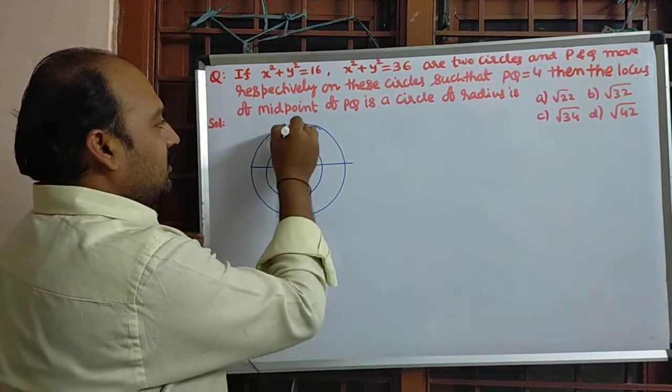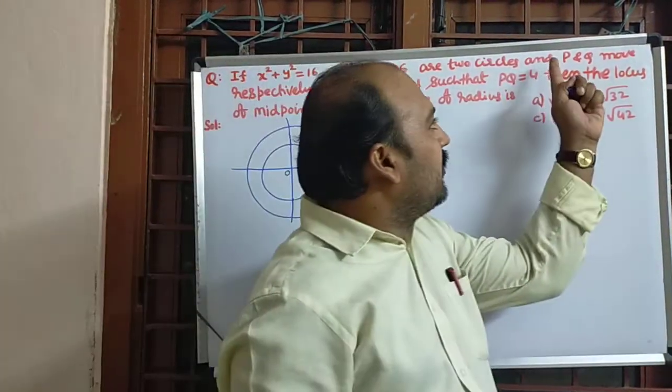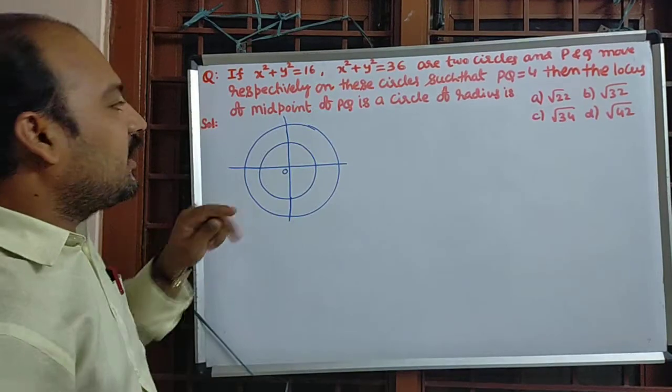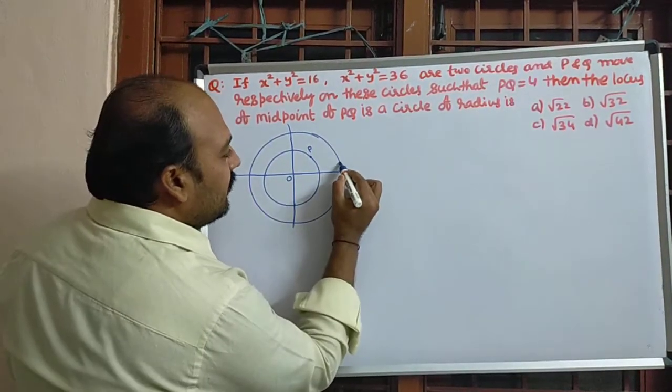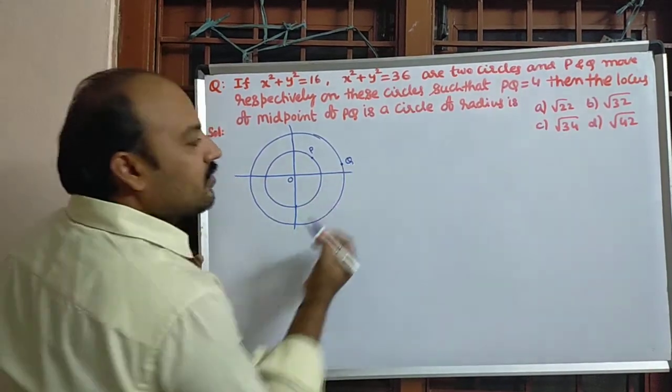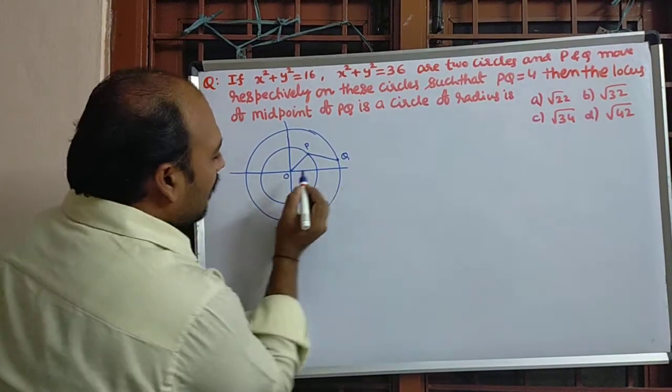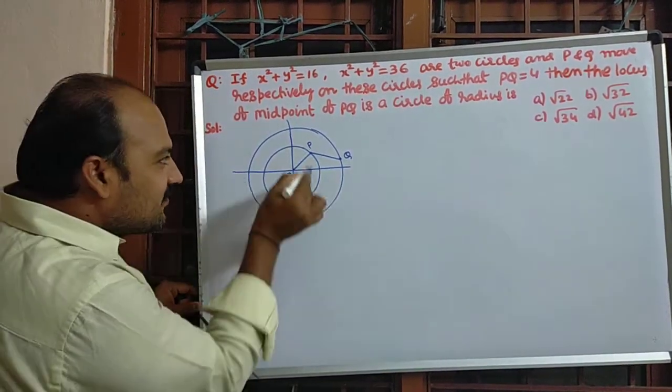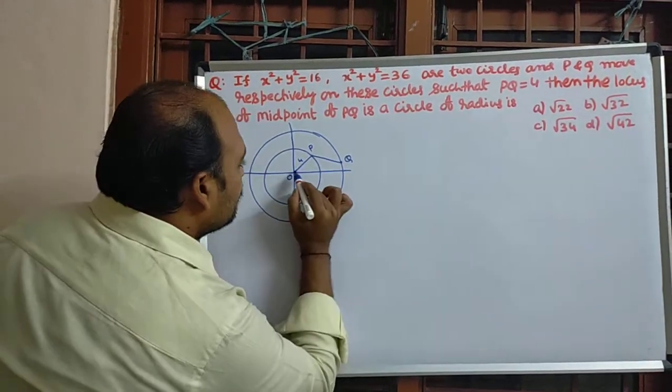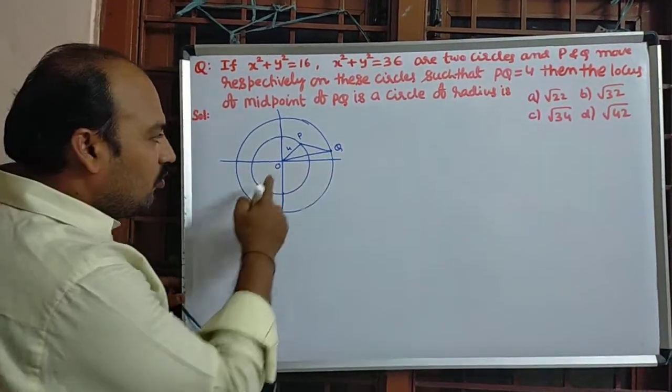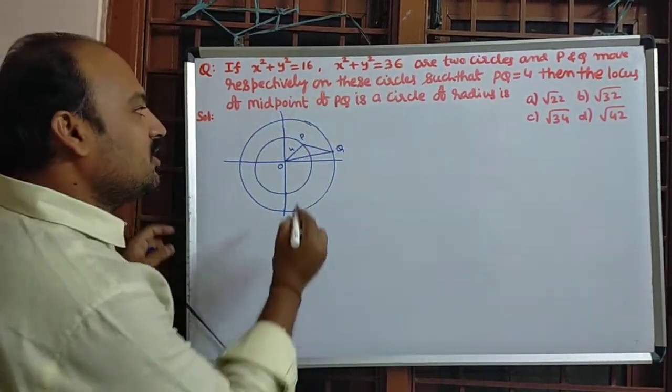This is the second circle. This is 4. One thing is mentioned: P and Q move on respective circles. Here I am taking point P, here I am taking point Q. Join like this. OT means radius of first circle, that means 4. OQ, join O and Q also. OQ is a radius of second circle. 36 means here is r, r is equal to 6.